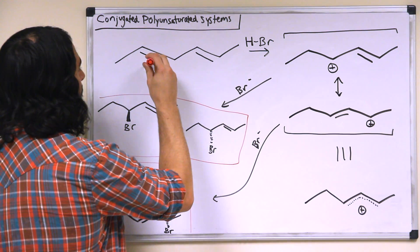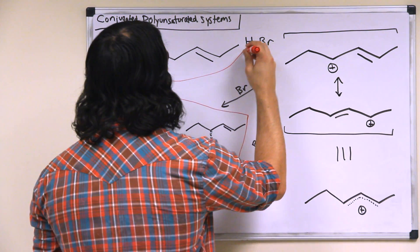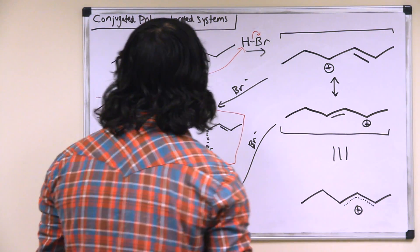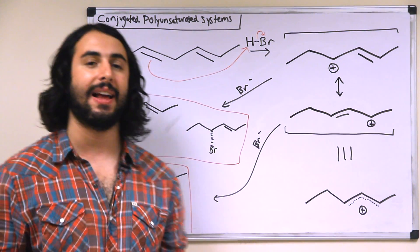So let's go ahead and do this hydrohalogenation. Let's say this pi bond is going to act nucleophilically, grab this proton, so we're going to get a carbocation intermediate.